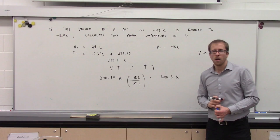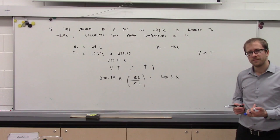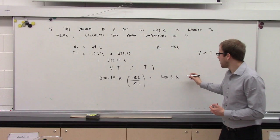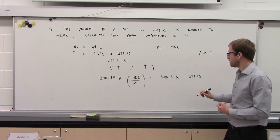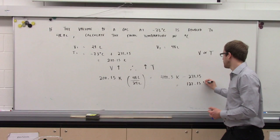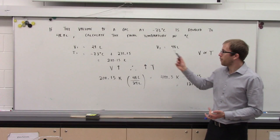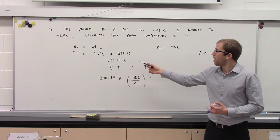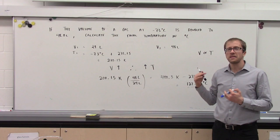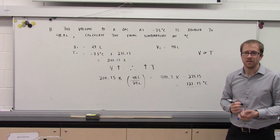Are we done? No — the question asks for the final temperature in degrees Celsius. So we subtract 273.15 to get a final temperature of 127.15 degrees Celsius. You can see that by doubling our volume, we doubled our temperature in Kelvin. Our temperature in degrees Celsius went from negative 73 to 127.15. There is very little you can ascertain by working directly with degrees Celsius — you must always convert to Kelvin.